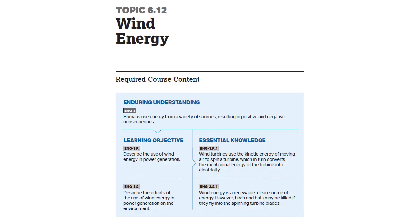So we talked about how wind turbines work — that's the first learning objective — and then the effects on the environment, primarily bird and bat deaths, but wind is a renewable, clean source of energy and is critical in our transition away from fossil fuels. Alright, I hope you guys learned something and I'll see you all in class.